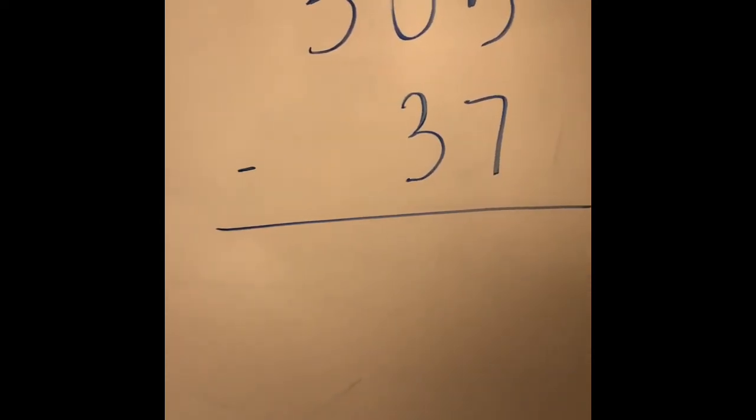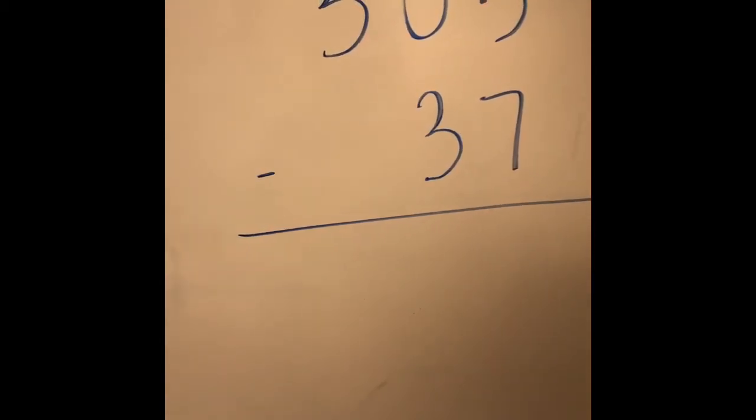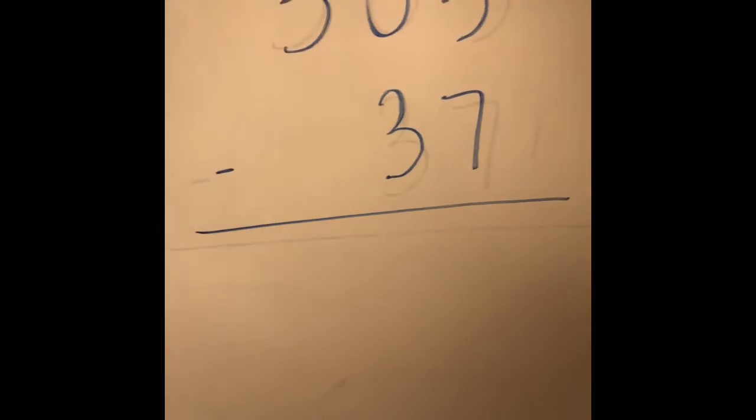So we have two whole numbers. We're going to subtract 37 from 305, which is the meaning of subtraction when you count the remaining of what is left over.